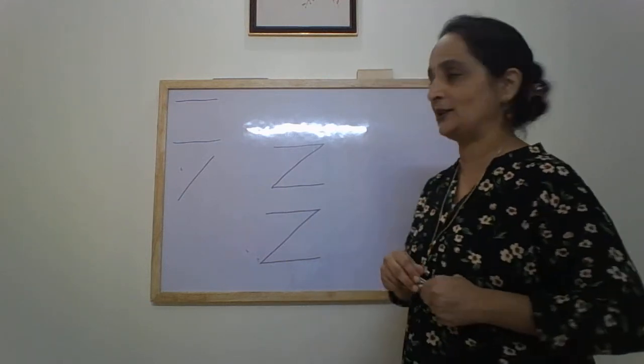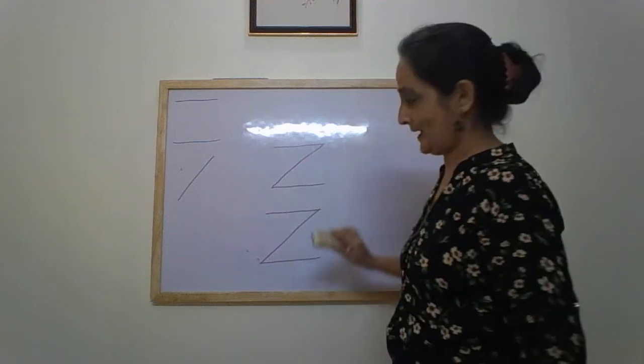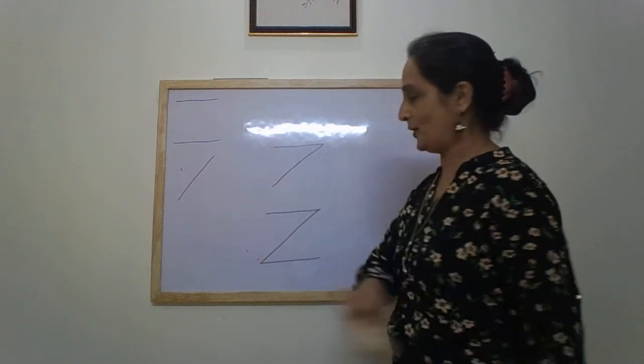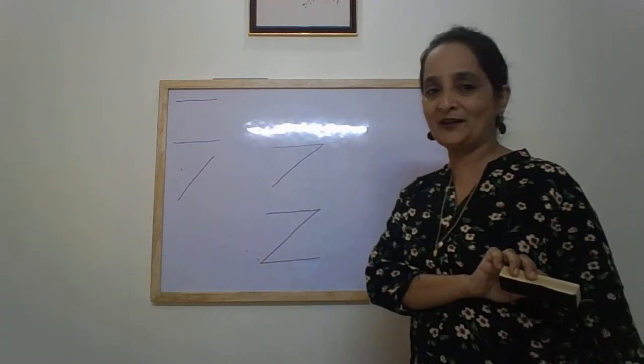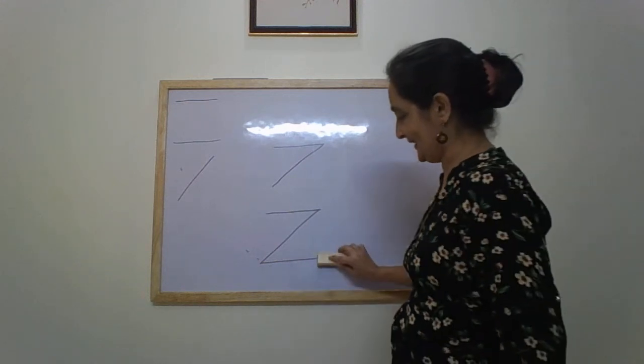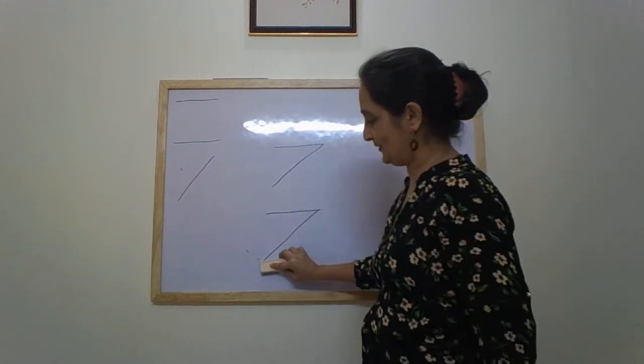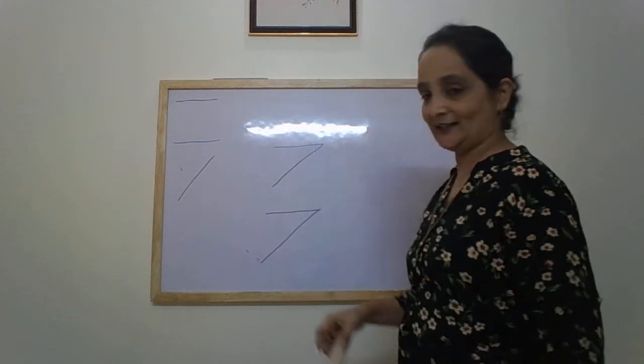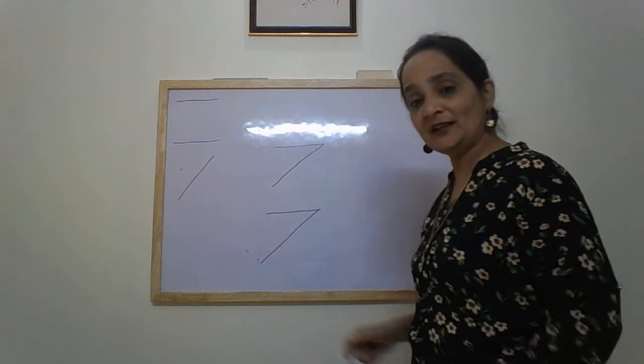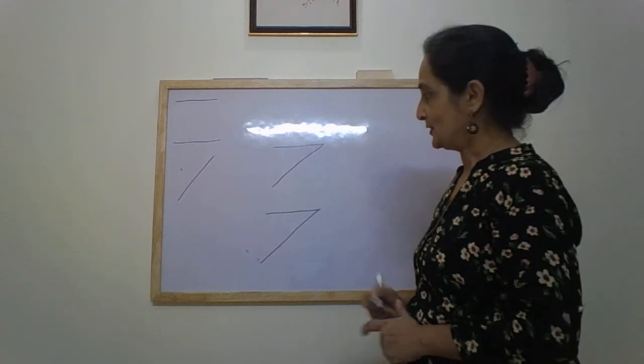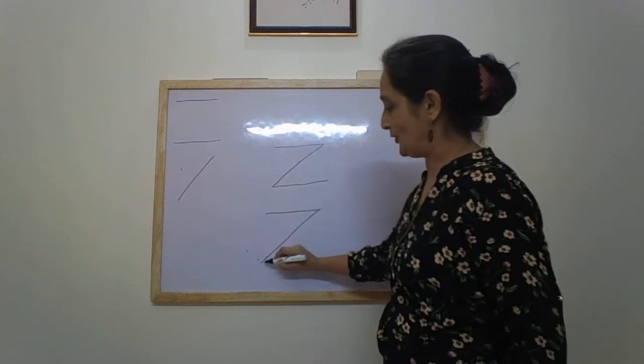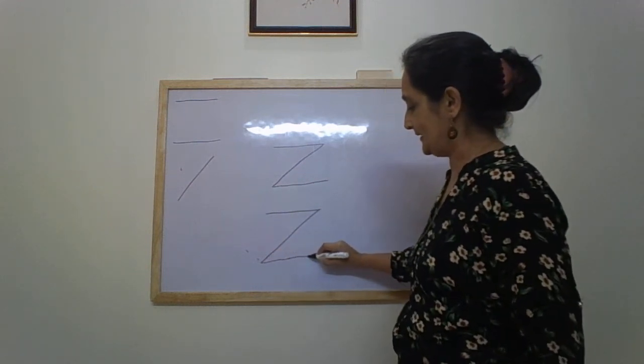Now let me show you some fun. I am going to rub off this line. Now what does it form? What does it look like? Number 7. See this, if there is only one sleeping line and one slanting line, it is number 7. And we have already learned to write number 7. So we make a 7 and one more sleeping line to form letter Z.